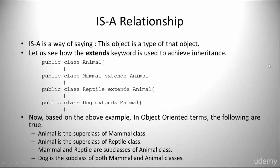Let's look at the is-a relationship. Is-a is a way of saying this object is a type of that object. Let's take a look at how the extends keyword is used to achieve inheritance.